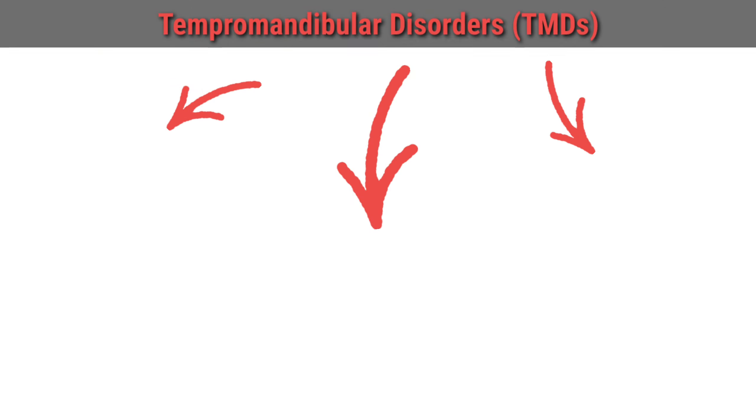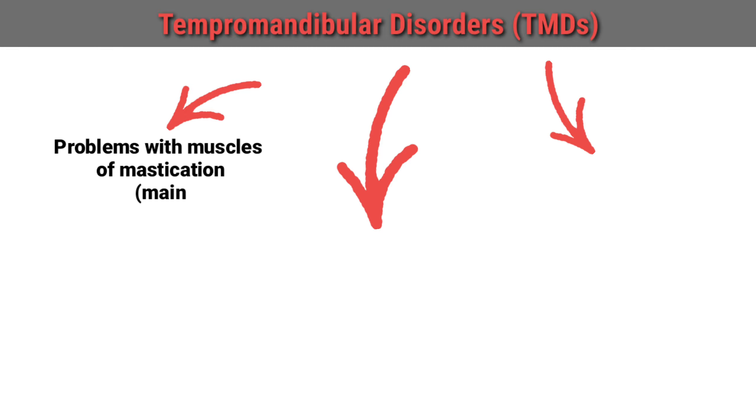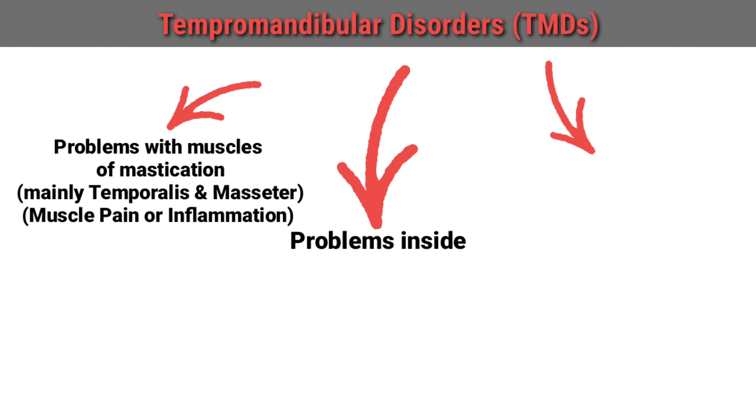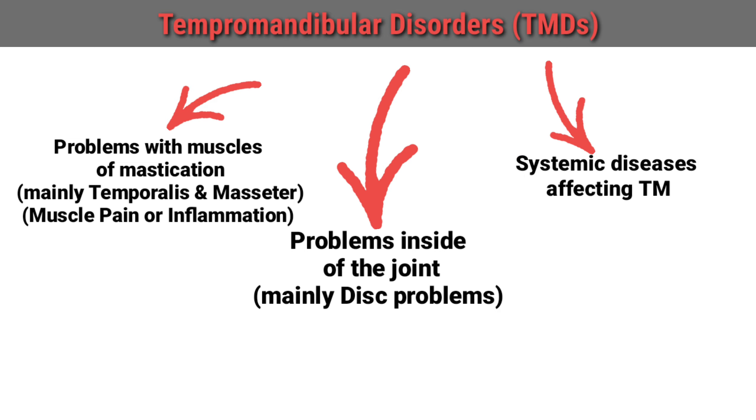The cause of temporomandibular disorders is not specific. TMDs happen more in women than in men, and the disc of the TMJ was found to have oestrogen receptors. We can classify TMDs into problems associated with the muscles of mastication, problems inside the joint, or systemic diseases.